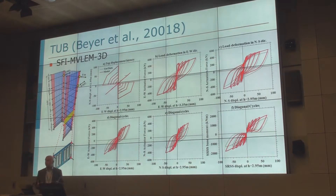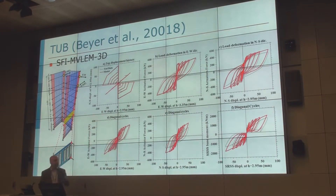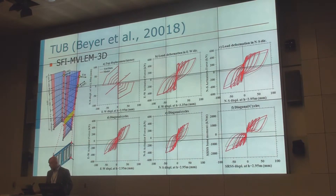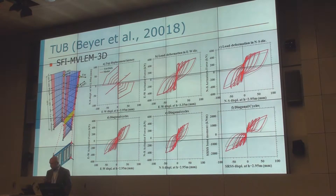This macro model is macroscopic and pretty computationally efficient. We're aware of its limitations, but it still does a pretty good job in terms of overall load-deformation in all directions — maybe except the diagonal direction, where we see overestimation of about 25-30%, possibly because of the plane section assumption. But overall, still not too bad. It performs better than Perform3D, which we validated against the same test and found overestimates capacity by quite a bit under multi-directional loading.